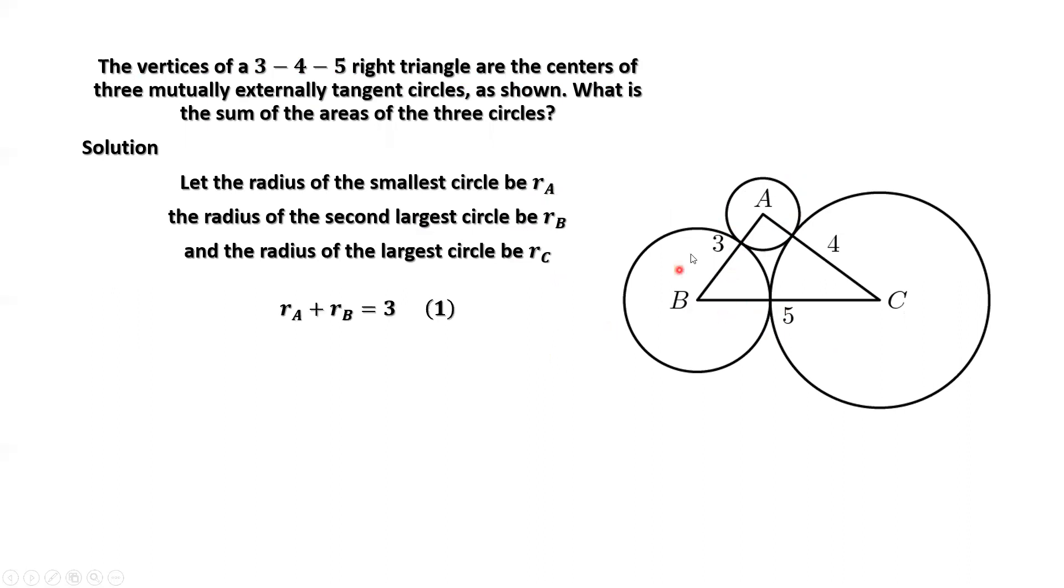From this graph, we can easily see the following results. RA plus RB equals 3. RA plus RC equals 4. RB plus RC equals 5.